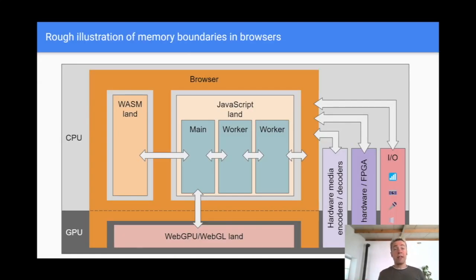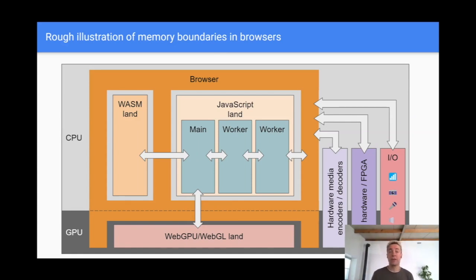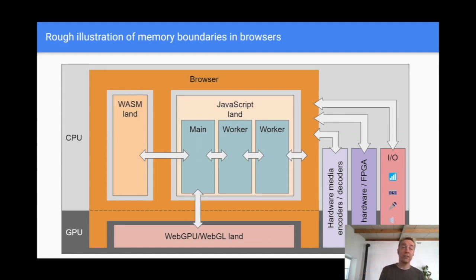Browsers manage a number of memory boundaries — some are physically disjoint, others are logically separated for security, or because the shape of objects in memory is different. Browsers typically abstract these boundaries away from web applications, and that's usually a good thing, except perhaps when applications need to reason about memory copies.